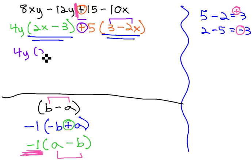We now have 4y, times 2x, minus 3, and instead of plus 5, we'll change it to minus 5, and that changes the order of subtraction. Just as b minus a became a minus b, 3 minus 2x becomes now 2x, minus 3.